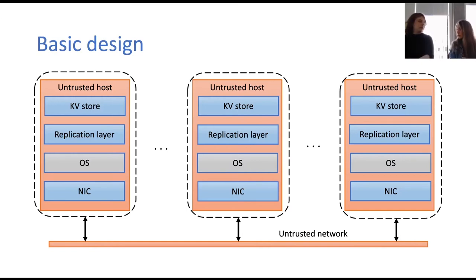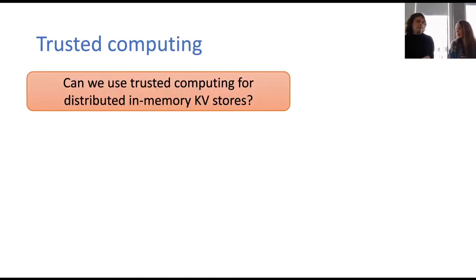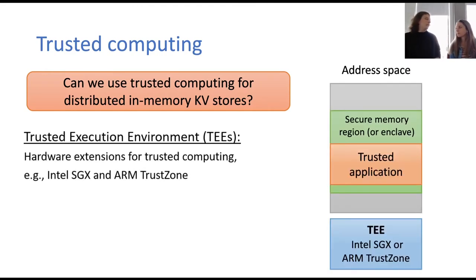Doesn't BFT already solve that? BFT indeed ensures protocol execution correctness, but it doesn't provide any confidentiality guarantees, and additionally it is very slow. So what about using trusted computing for designing Avocado? A trend in trusted computing are trusted execution environments. They provide an abstraction of a secure memory area in which you can put code and data, protected even against privileged adversaries like the operating system or hypervisors.